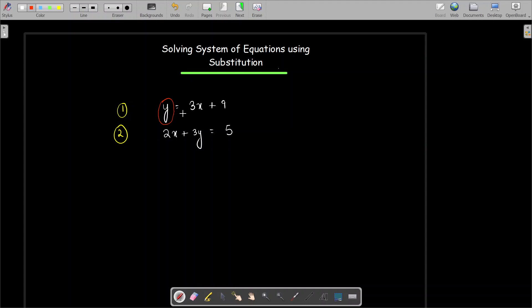What we need to do in substitution is we will use the value of Y, which is 3X plus 9 from the first equation, and we are going to substitute this value of Y in the second equation.